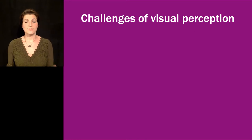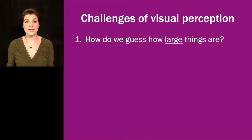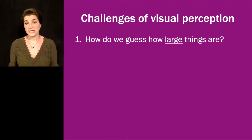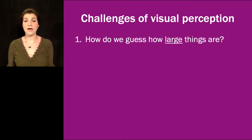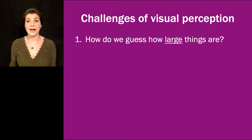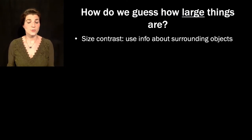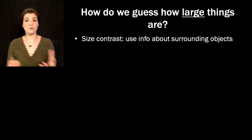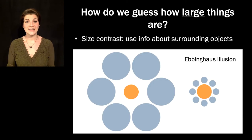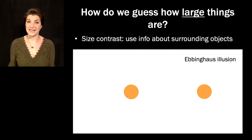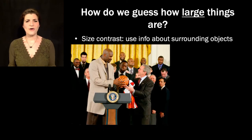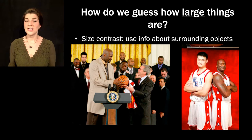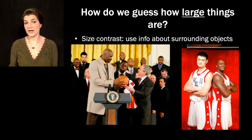Given the very limited, ambiguous stimulus that gets to our retina, how do we know how big objects in the real world are? One way is to evaluate size by comparing objects to surrounding objects—this is referred to as size contrast. The classic demonstration is the Ebbinghaus illusion: which orange circle appears bigger? They're actually the same size. Things look smaller when they're next to big things and bigger when they're next to small things.